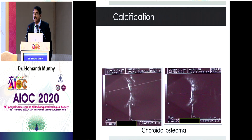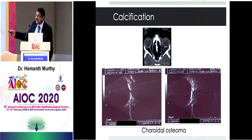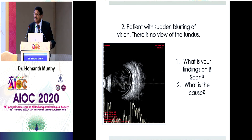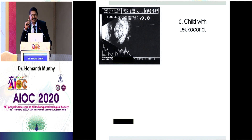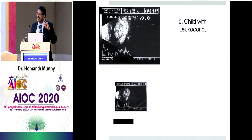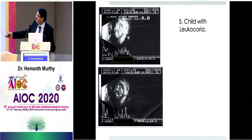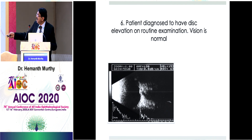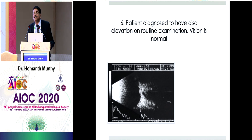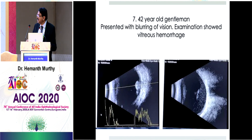Choroidal osteoma with calcification is clearly seen on CT or ultrasound. One case presented with leukocoria — the diagnosis was not obvious on B-scan, but on linear ultrasound multiple areas of calcification were clearly visible. Another patient was diagnosed with disc elevation with normal vision and underwent MRI. On ultrasound, a high reflectivity spike was seen at the disc — this is optic nerve drusen, also called disc drusen. This is one condition where ultrasound is diagnostic.